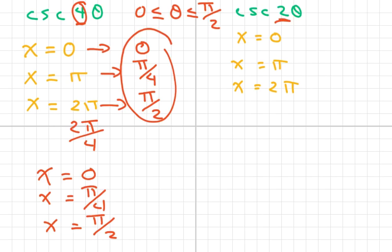Now for this one, remember this is your period change, so that would be 2 pi over 2, so your period's pi. So you're merely dividing everything by 2.